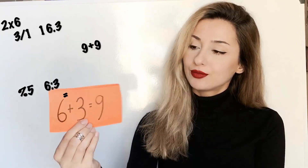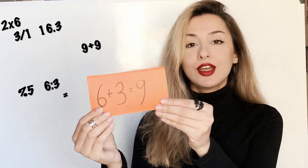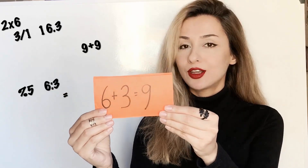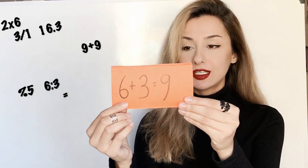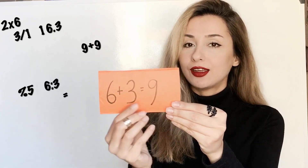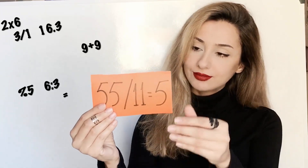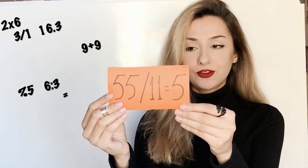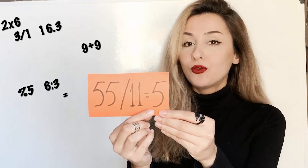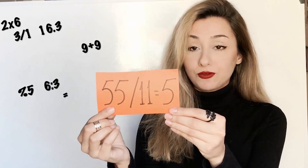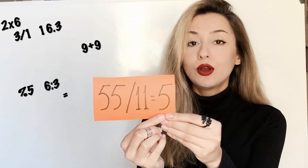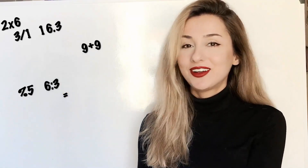Six plus three equals nine. Fifty-five divided by eleven equals five. That's all.